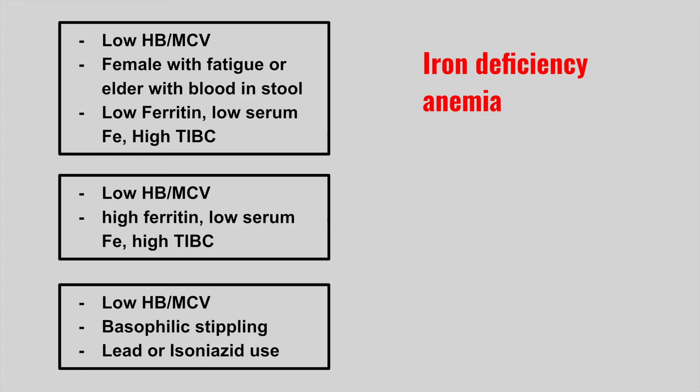The next patient is going to have a low hemoglobin, low MCV, with a high ferritin, low serum iron, and a high TIBC. This is anemia of chronic disease. Remember that hepcidin is an inflammatory molecule that leads to this presentation. Patients with chronic diseases such as rheumatoid arthritis or lupus can get this anemia, which can be either microcytic or normocytic.